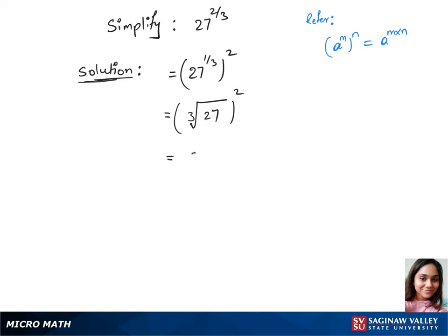The cube root of 27 is 3 — just use the calculator — and the power 2 remains. So we get 3 squared, and 3 times 3 is 9. That's our answer.